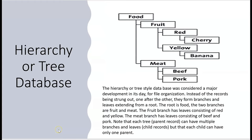What came next in history was the hierarchical database, also called the tree database, considered a major development in file organization. Instead of records being strung out one after the other, they form branches and leaves extending from a root. For example, the root is 'food,' with two branches: 'fruit' and 'meat,' each having their own leaves. Each parent record can have multiple branches and leaves, but each child can only have one parent.